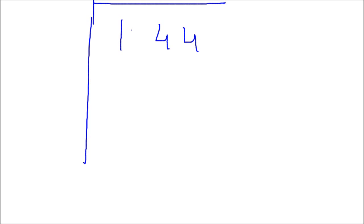The key difference from the previous video is you have to keep the decimal point in mind. You need to form separate pairs for the digits to the right of the decimal and the digits to the left of the decimal. For digits to the right of the decimal, you divide into pairs moving from left to right.